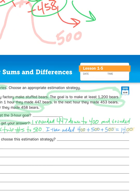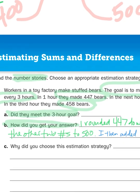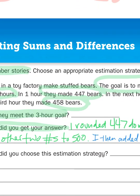So, back to the original problem. Did they make their goal of at least 1,200 bears? Well, 1,200 is smaller than 1,400. Or, 1,400 is above their intended goal. So, to answer the question, did they meet their three-hour goal? The answer is, yes, they did.